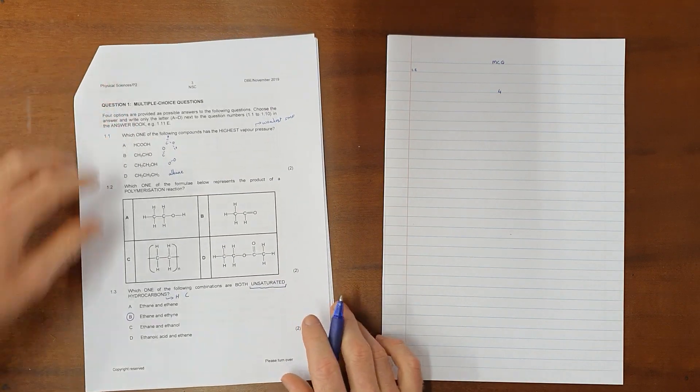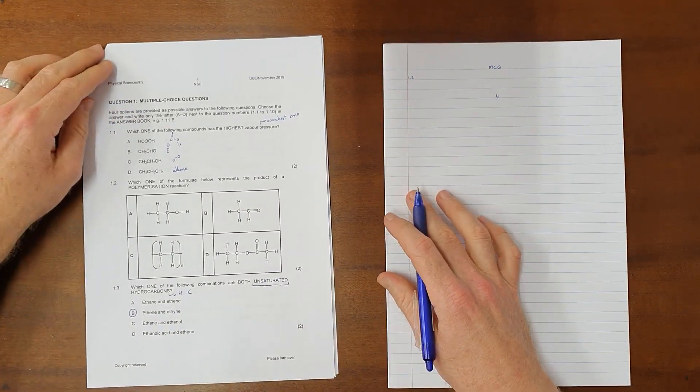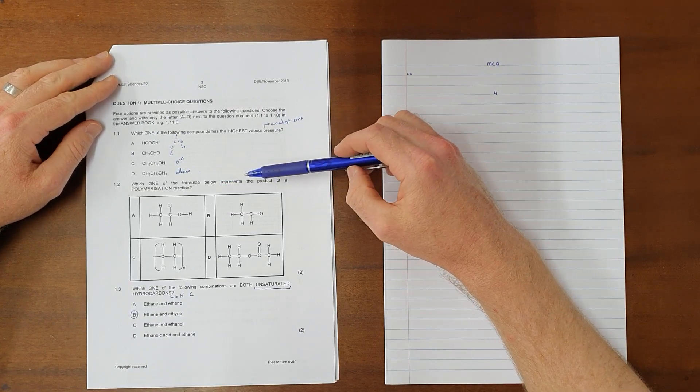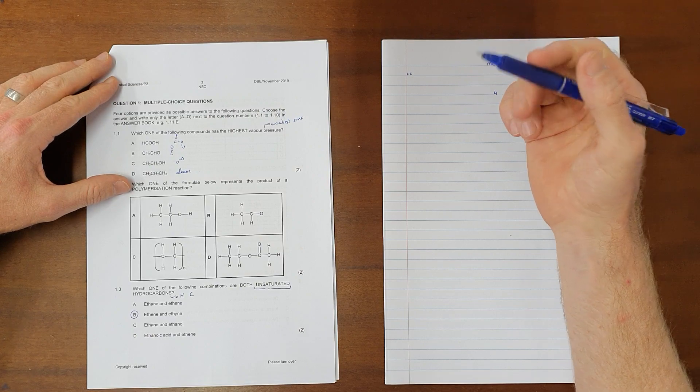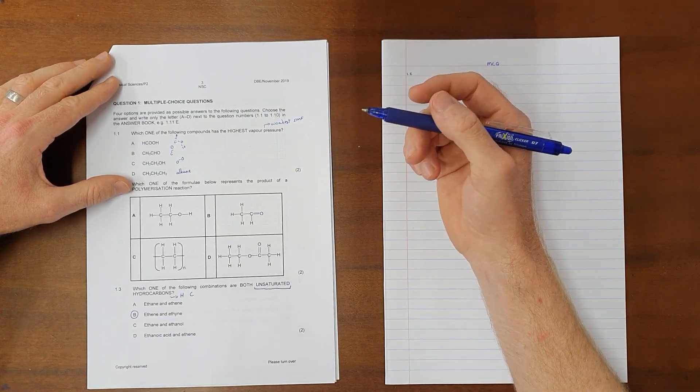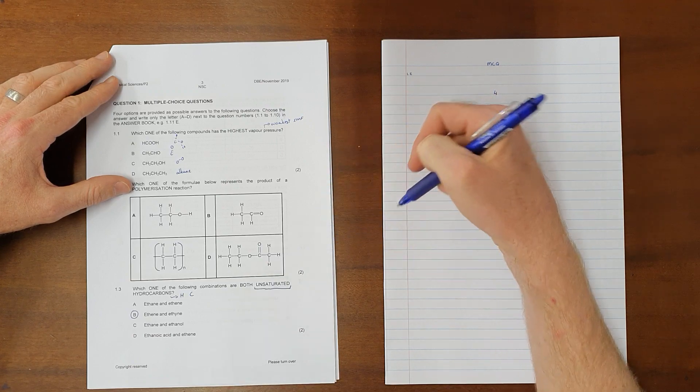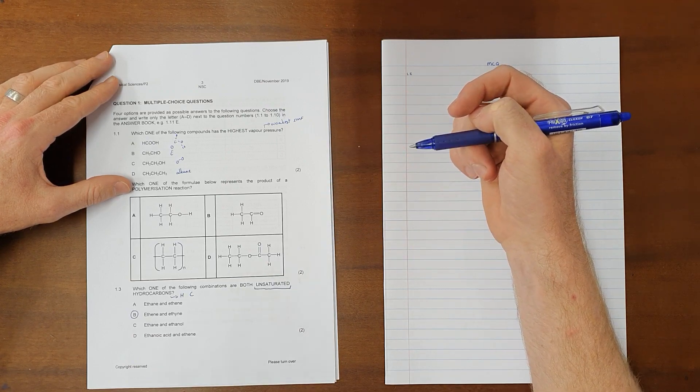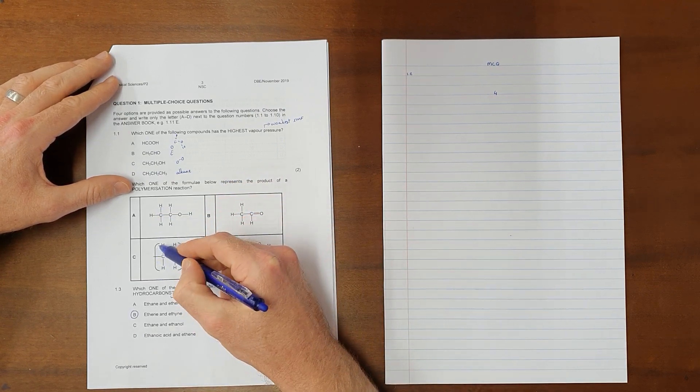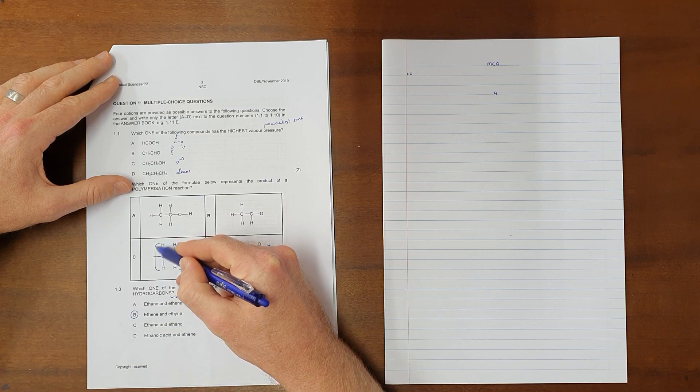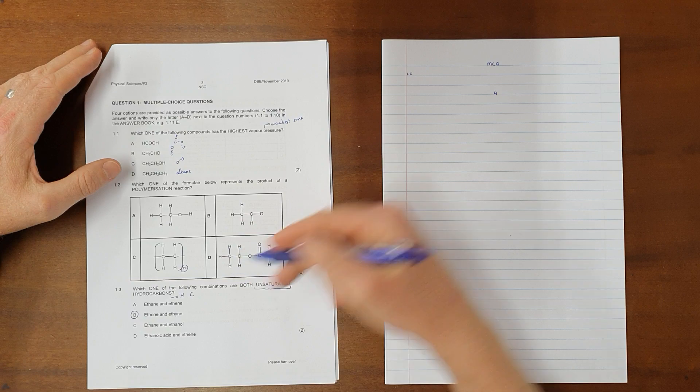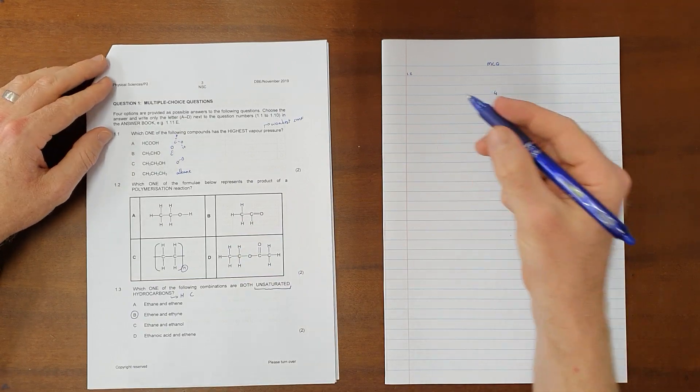The first question in this section is question 1.2 in the multiple choice, which reads as follows: Which one of the formulae below represents the product of a polymerization reaction? Where a polymerization is where a group of monomers combine to form a large or macro molecule. The most common way in which we write a polymerization is where we show what the repeating unit is in brackets, where we then use this letter N to say how many of those repeating units are stacked end to end.